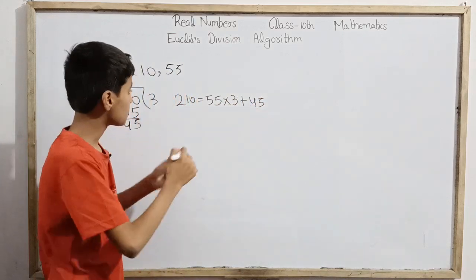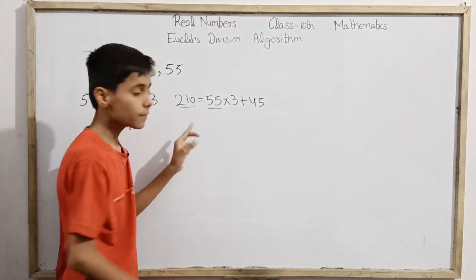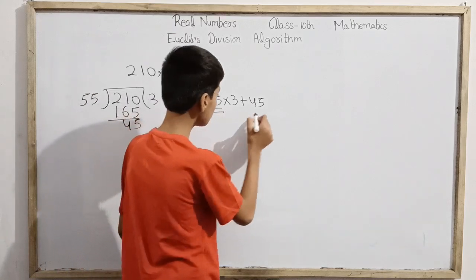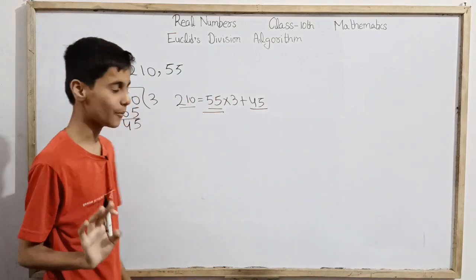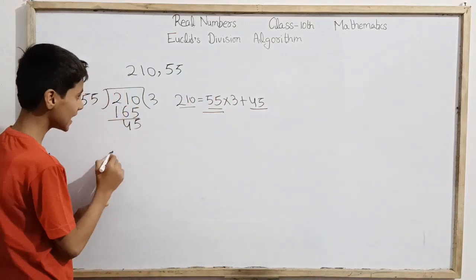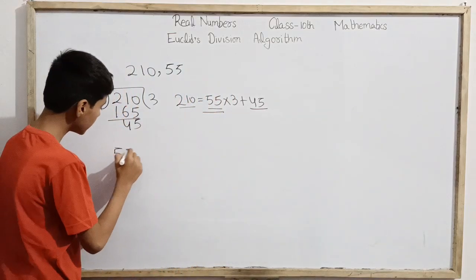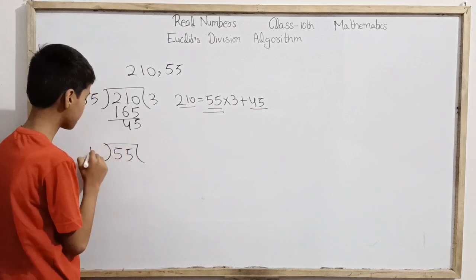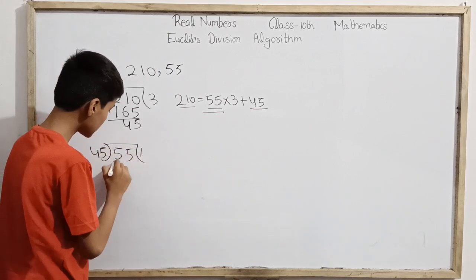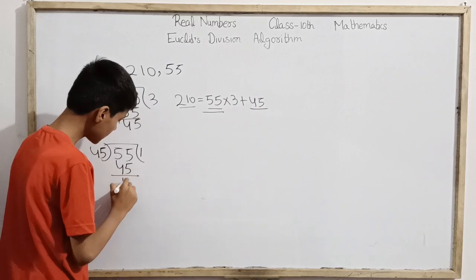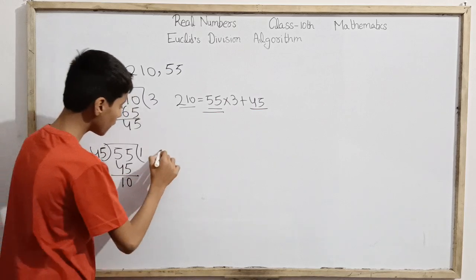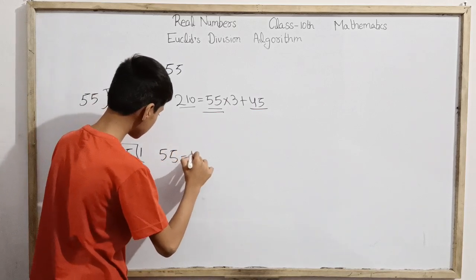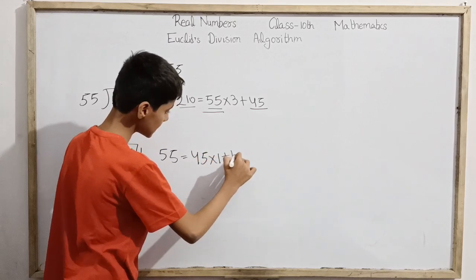According to the previous theorem, the common divisor of 210 and 55 is the same as the common divisor of 55 and 45. Now what I'll do is divide 55 by 45. It goes in 1 time and leaves 10.